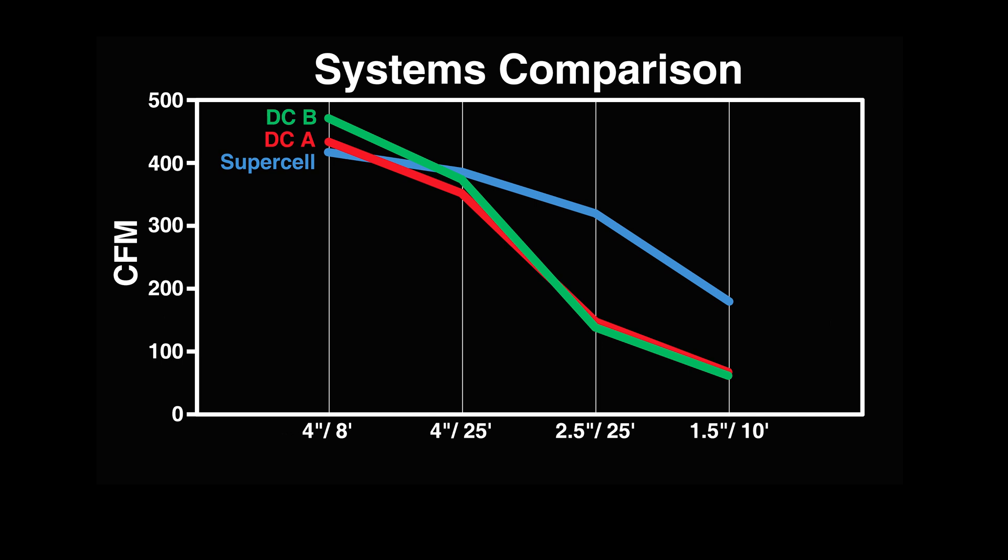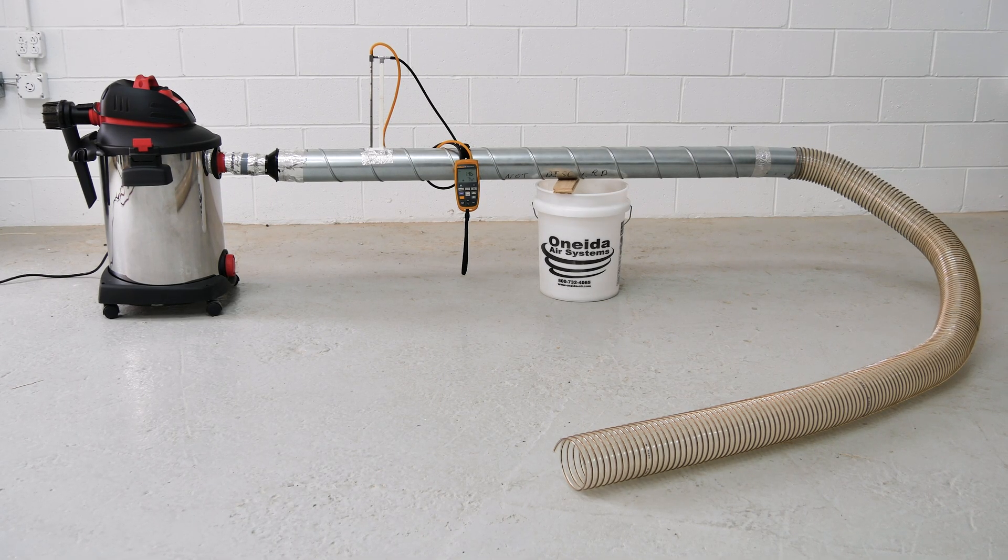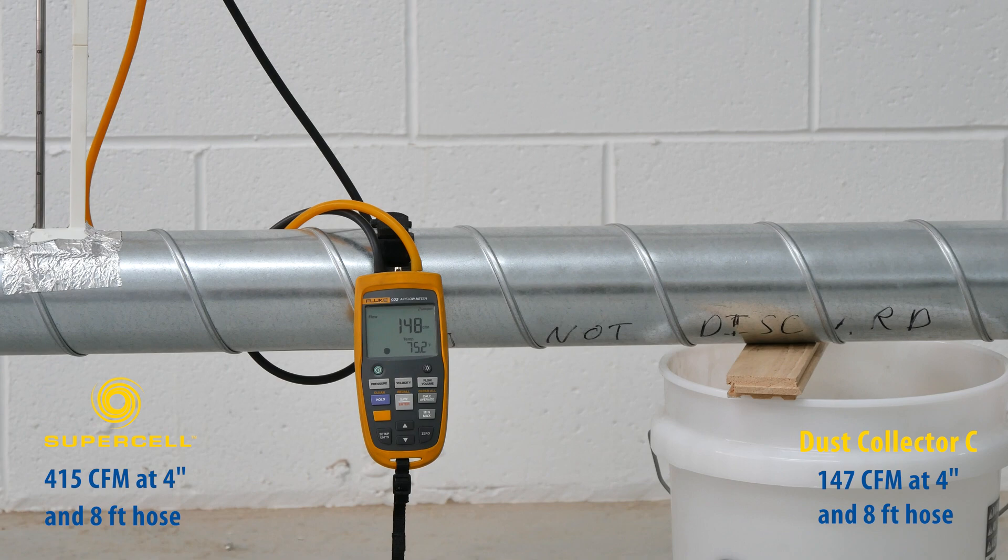Finally, the larger wet-dry vacuum. With 8 feet of 4-inch hose, the wet-dry vac pulls 147 CFM. With 25 feet of 4-inch hose, the CFM is 145.